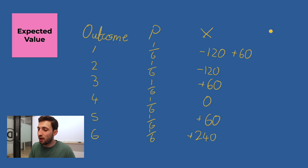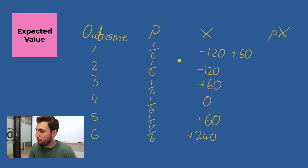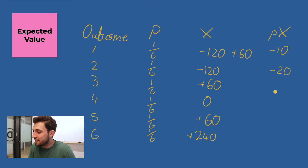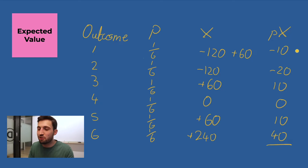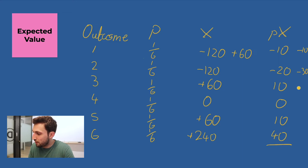Now let's do another column with probability times payoff for each outcome. One sixth times minus 60 is minus 10. One sixth times minus 120 equals minus 20. One sixth times 60 is 10. One sixth times zero is zero. One sixth times 60 is 10. And one sixth times 240 is 40 pounds. Summing up this column: minus 10, minus 30, plus 10 brings us back to minus 20, still minus 20, then minus 10, and then plus 30.